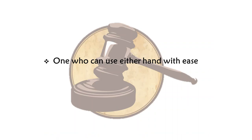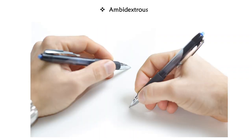A person who can use either hand with ease — can write, draw, paint or just use both hands effortlessly — that person would be called ambidextrous.